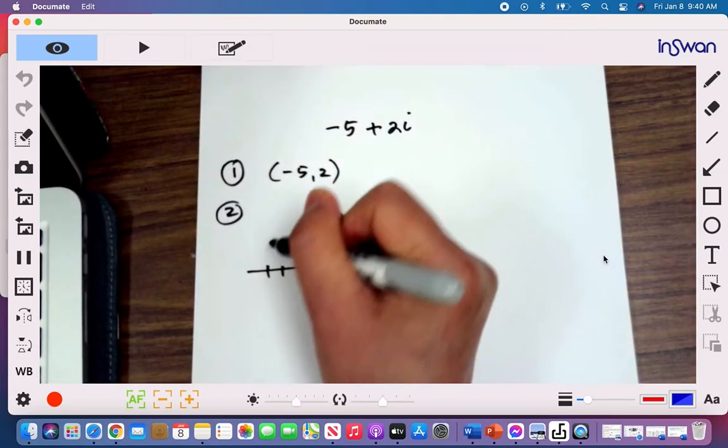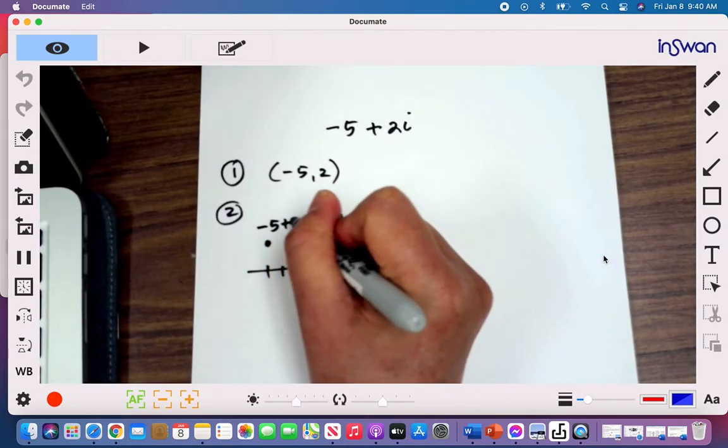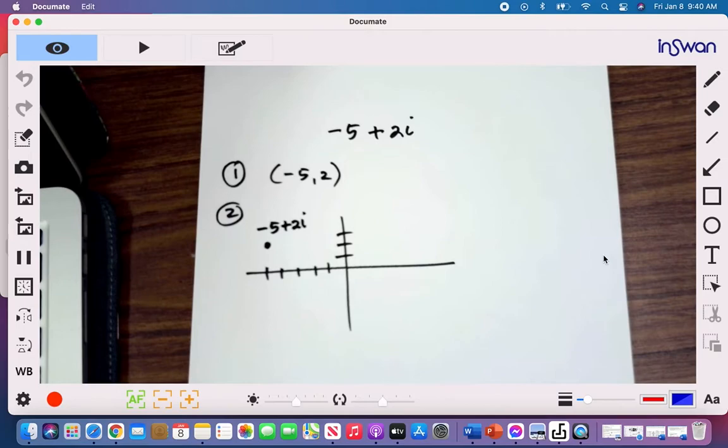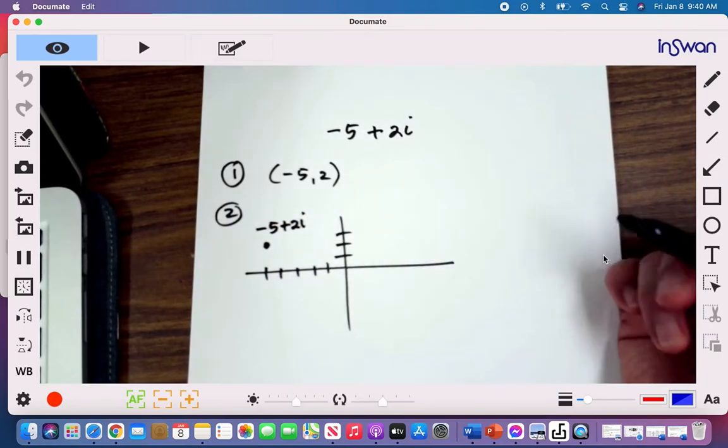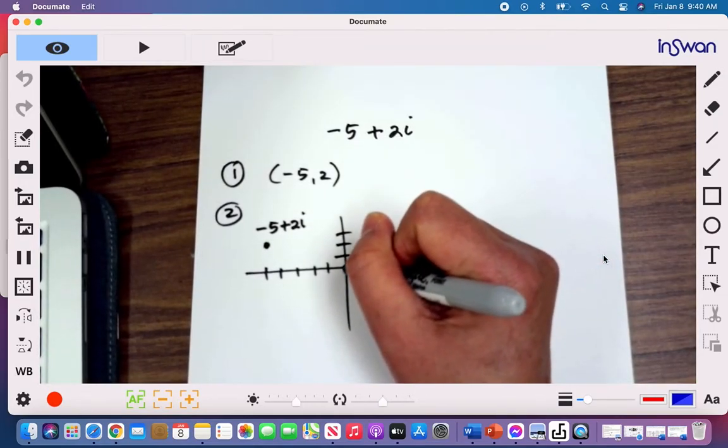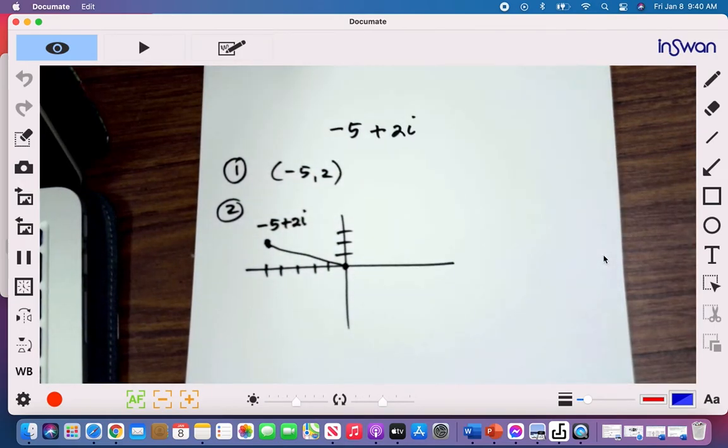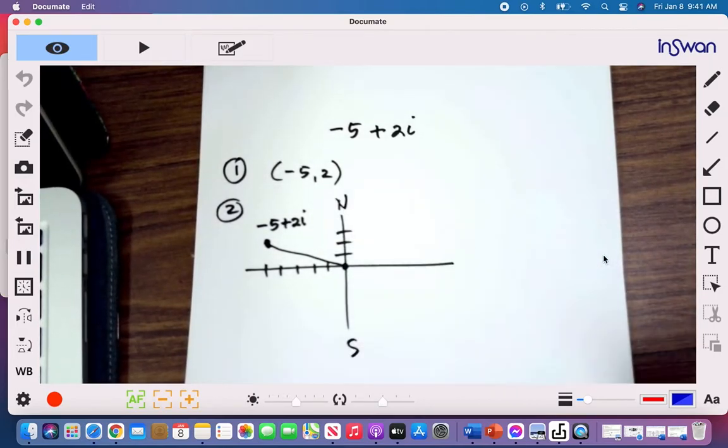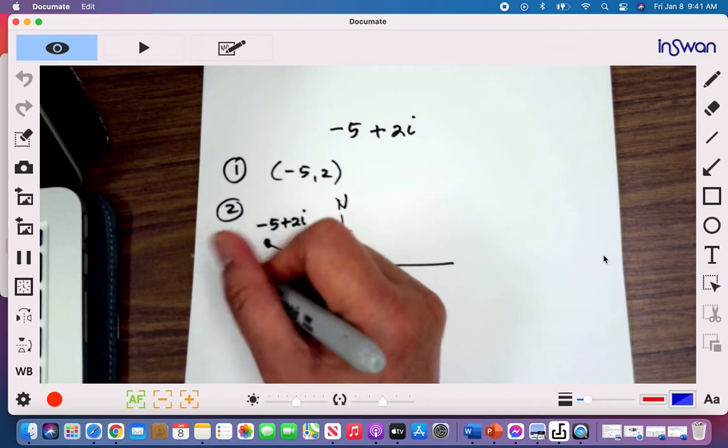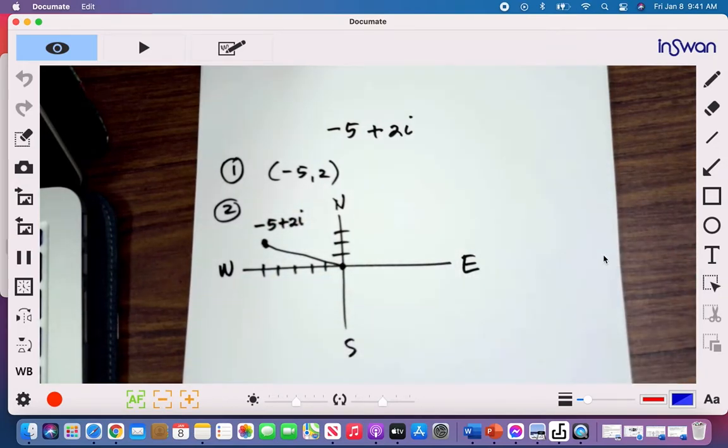So this is the complex number, negative 5 plus 2i, but we're not considering the point because it is a vector. It should have a magnitude and direction. So we will be connecting the point from zero. So that's our vector there. Now, what we want to happen here is to find the direction in the north-south line. But the calculator will always tell you a certain angle from the east-west line.